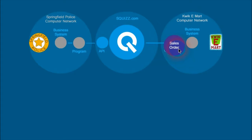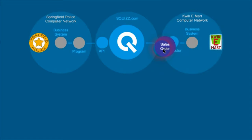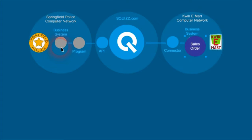The sales order would travel back through — there could be a connector installed on their computer network, or their software could allow the sales order to be imported directly into its system. This then allows Cookie Mart to dispatch the goods that have been ordered, and those goods can be delivered back to Springfield Police. By using Squiz.com, this automates a number of processes that may otherwise occur using telephone, fax, emails, or having to log in to different websites.